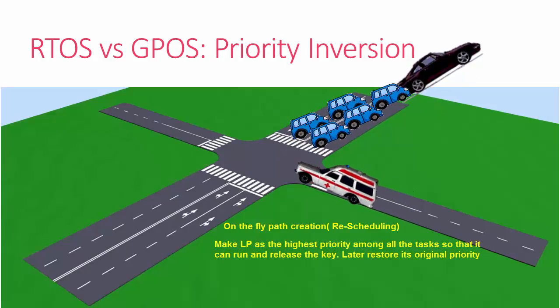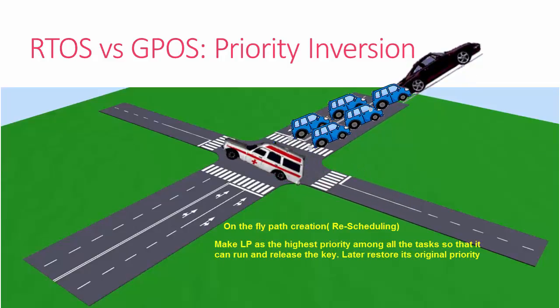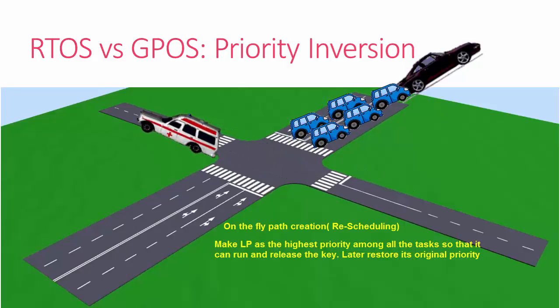...giving the lower priority task a chance to run and release the key. All these techniques are used by RTOS to at least minimize the priority inversion problem.